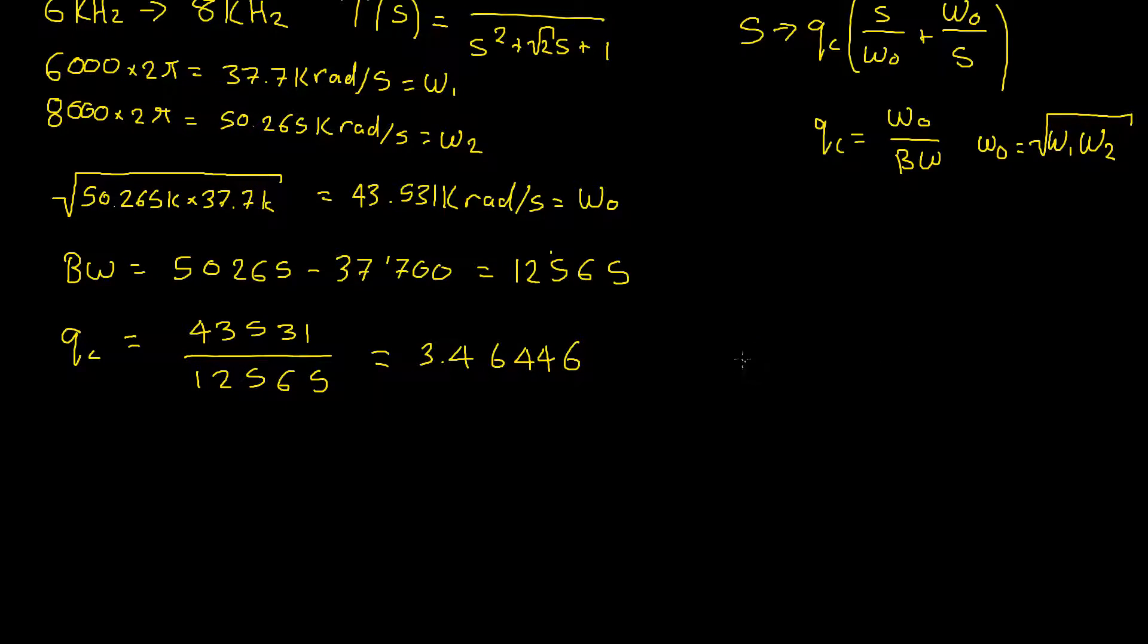We might do a little bit of rounding with that later, just probably don't want to write that out over and over. Now we have our S transformation. S is equal to 3.46 times by S divided by omega 0 which is 43,531 plus 43,531 divided by S. Okay so let's make the substitution into our original transfer function now. I'm just going to warn you now, the next bit is going to be a little bit ugly and there's going to be quite a bit of algebra to it. I'm not sure how many steps we're going to go through yet but hopefully it'll all make sense for you.